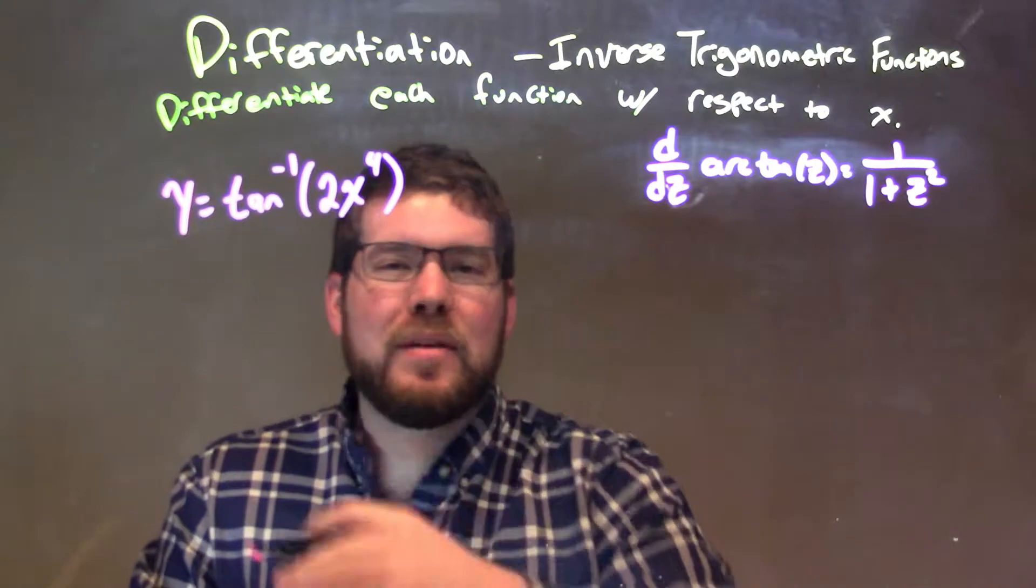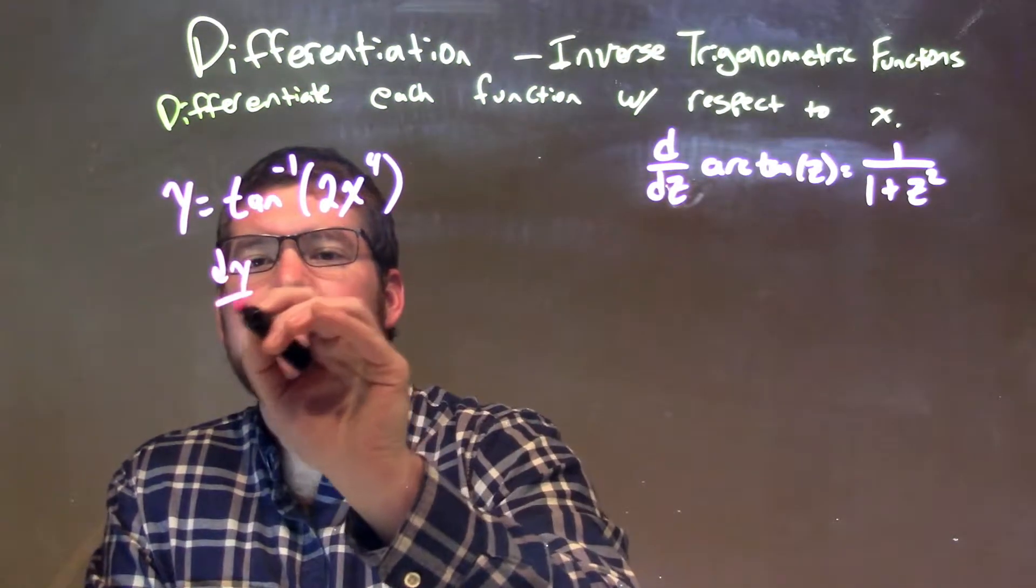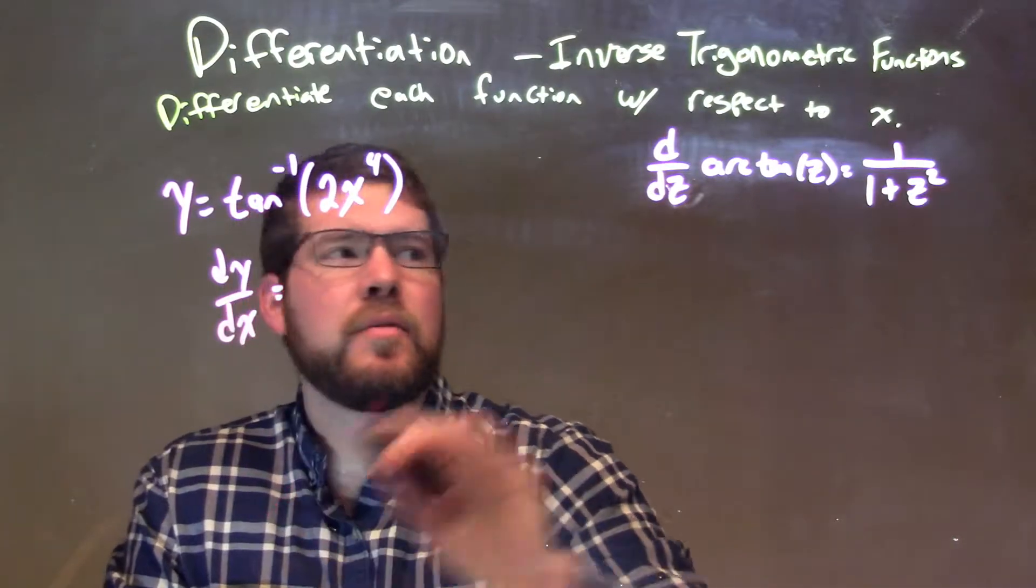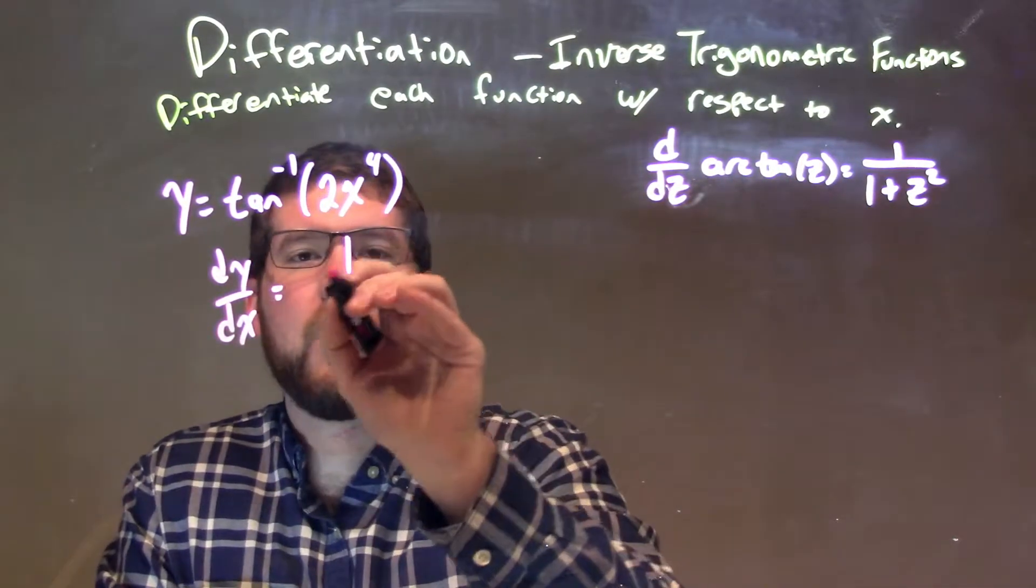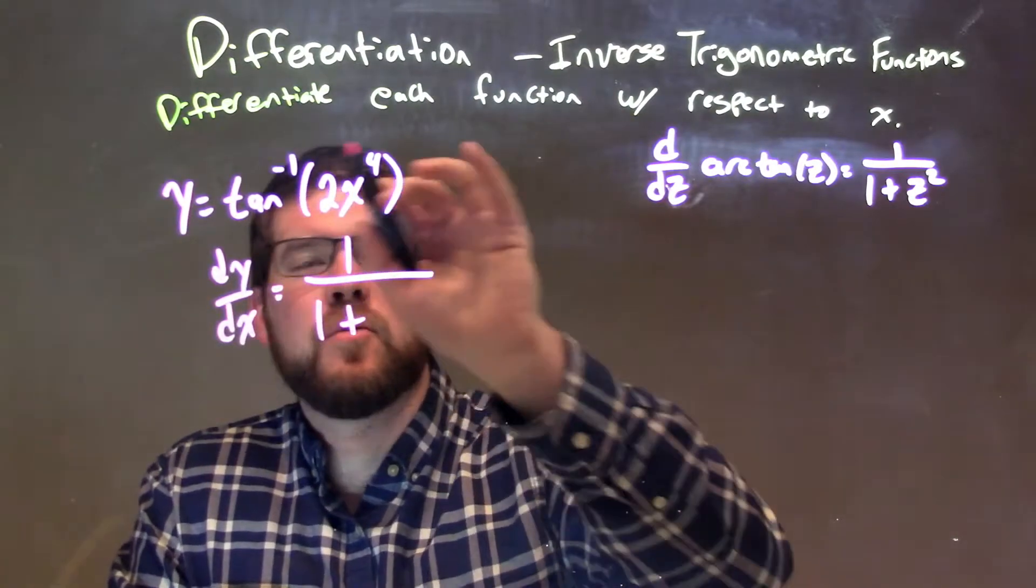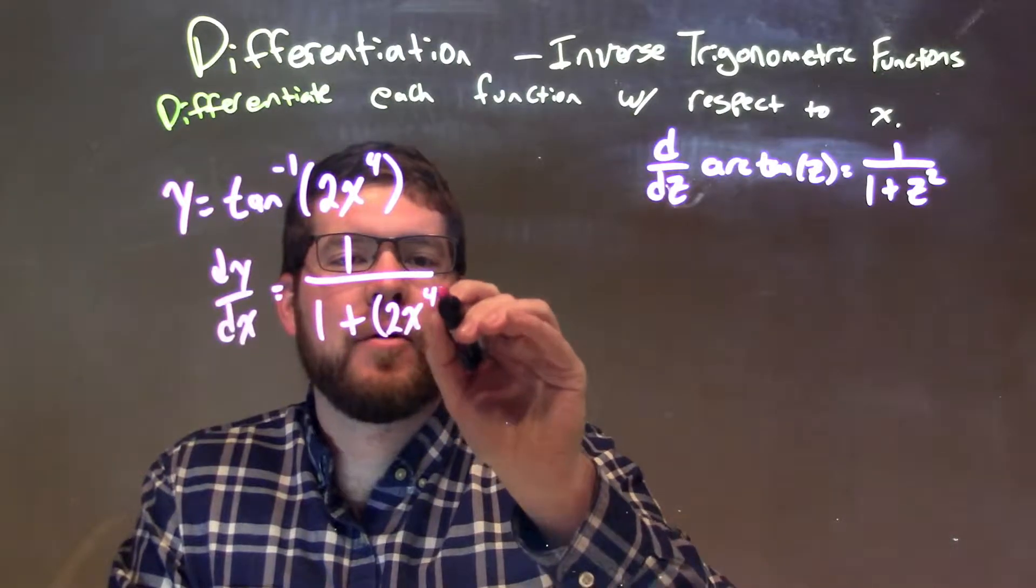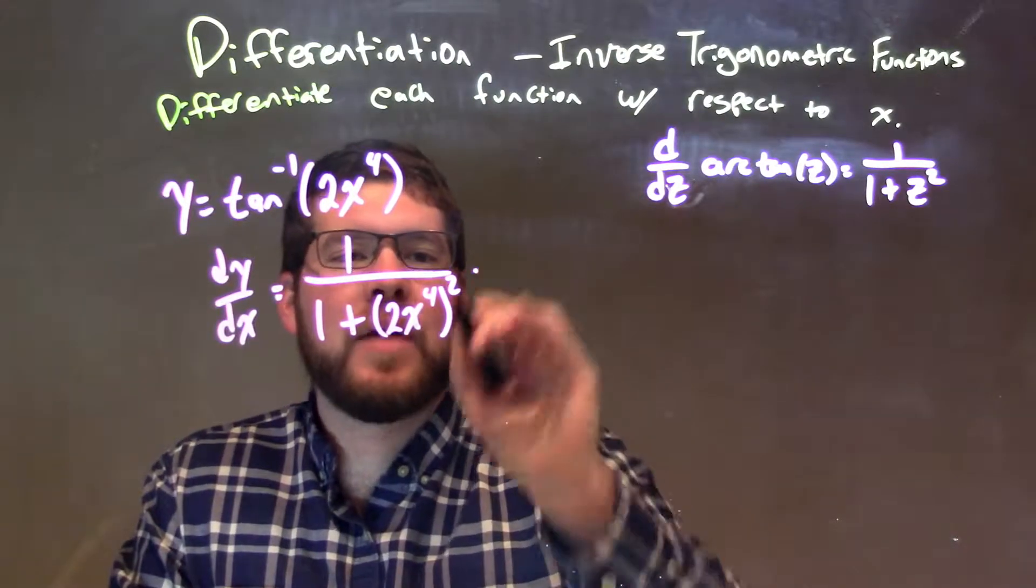So instead of z, I'm going to be putting what's in my parenthesis there. We're going to take the derivative dy/dx, and we just follow a formula: 1 over 1 plus, and z is what is inside of this parenthesis. We have 2x to the fourth power, and we need to square all of that.